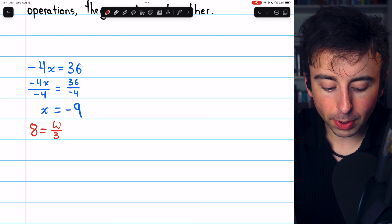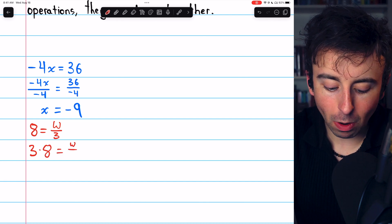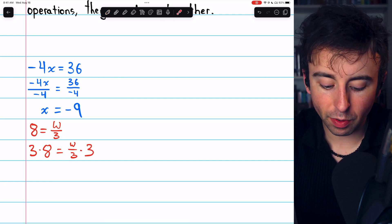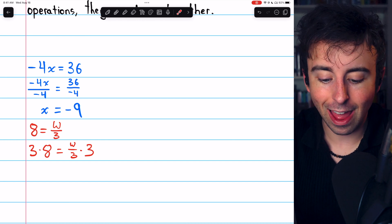So we'll multiply the left side of the equation by 3, and we'll multiply the right side of the equation by 3. Again, we're trying to undo the division by 3, so to do that, we have to multiply by 3.